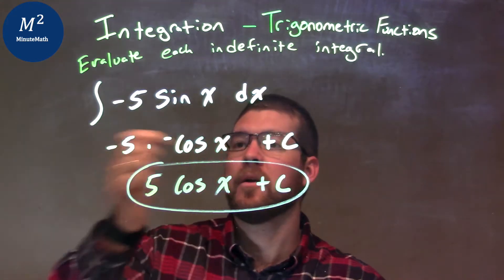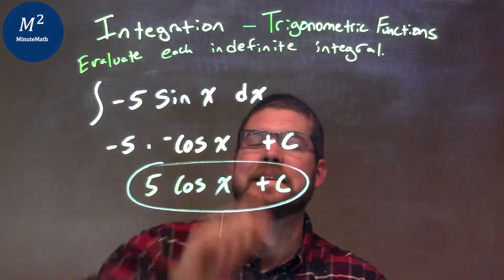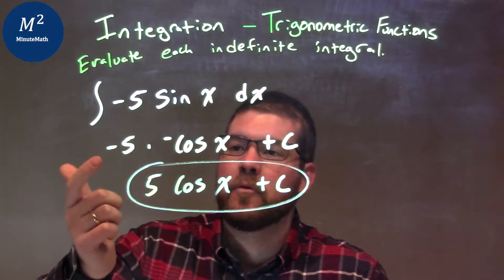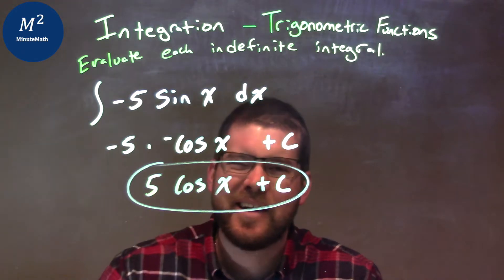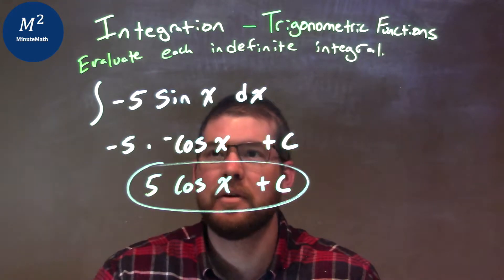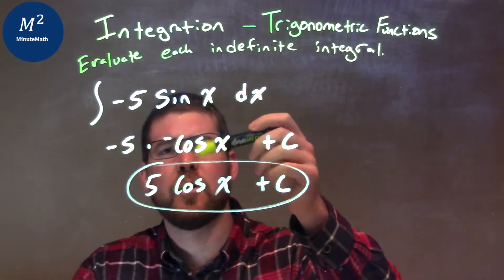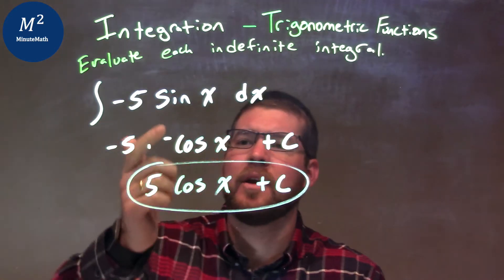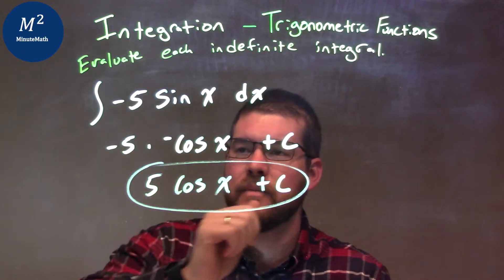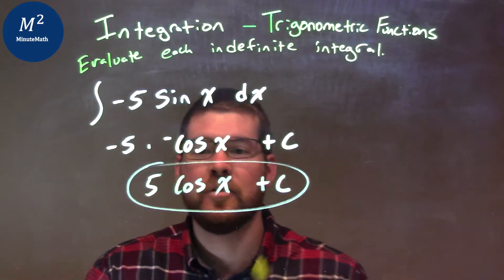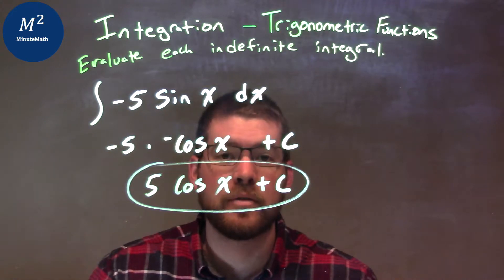So let's recap. We're given the integral of negative 5 sine of x dx. When I take that integral, I put my constant out front, and I think, okay, what will I take the derivative of to get sine of x? Well, it's negative cosine. The derivative of negative cosine is sine of x, so we have the integral here is negative cosine of x plus c. Negative times negative is positive, so again our final answer is 5 cosine of x plus c.